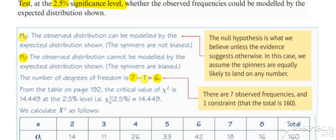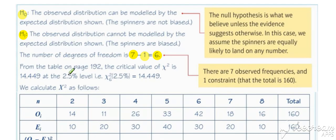And then we need to pick off our critical value at the 2.5% significance level for the chi-squared six distribution. So our critical value is 14.449.